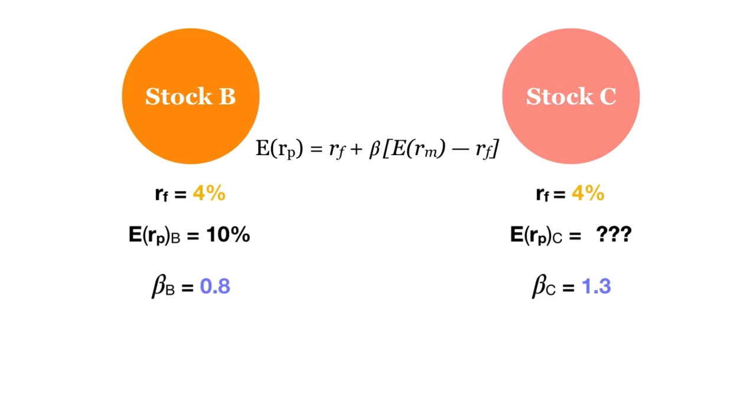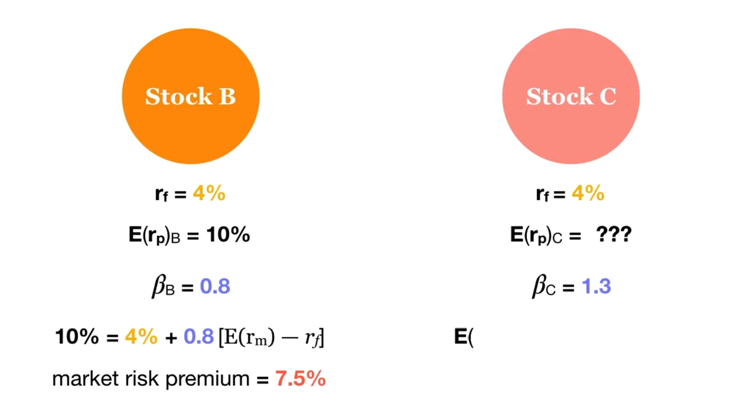Plug the numbers for stock B into the CAPM formula. 10% equals 4% plus 0.8 times the market risk premium. Solve for the market risk premium to get 7.5%. Now plug this back into our equation to solve for stock C. The expected return equals 4% plus 1.3 times 7.5%. Thus, the expected return for stock C is 13.75%.